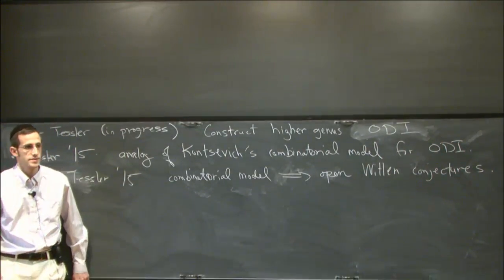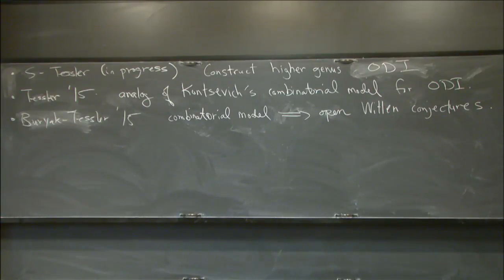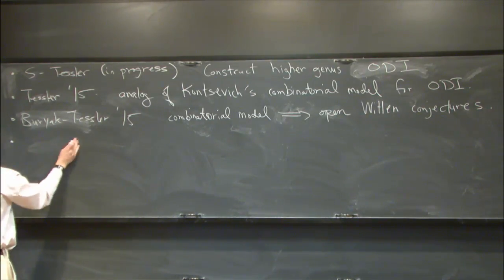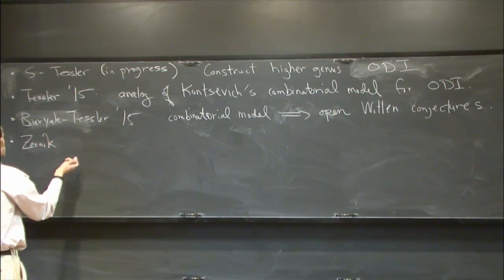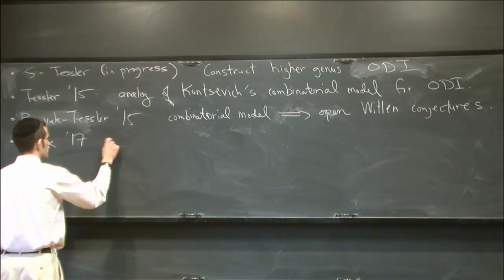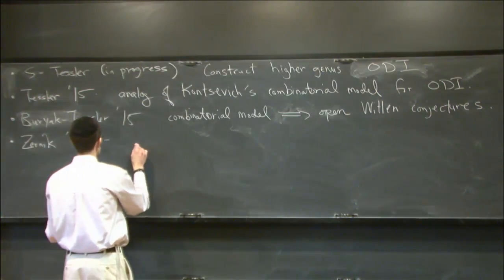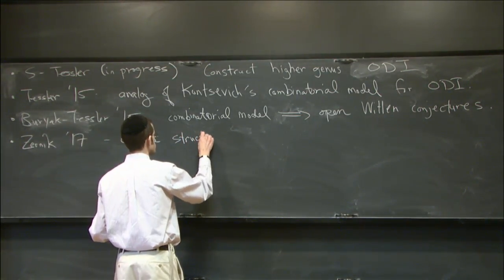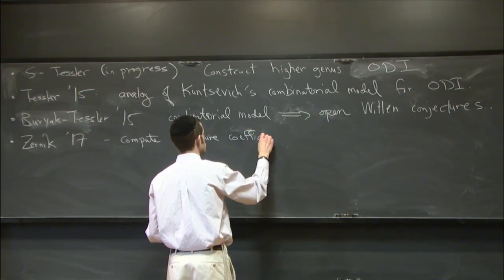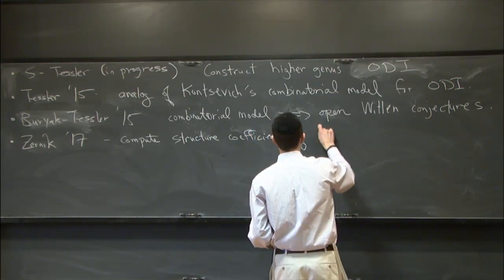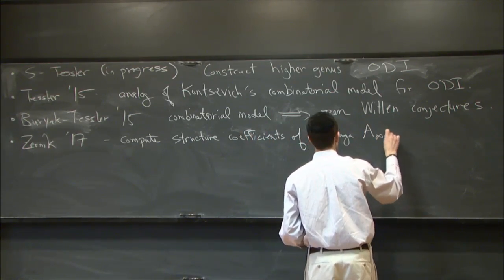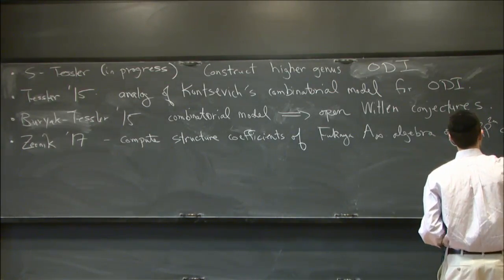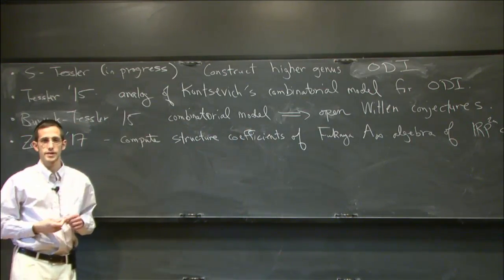So far this is kind of an analog of something people have had fun with in the closed theory. Why might it interest people at this conference? There's a very recent preprint of Zernick which shows that you can compute the structure coefficients — for instance, of the Fukaya infinity algebra of RP^n instead of CP^n — in terms of open descendant integrals in genus 0.